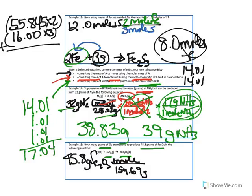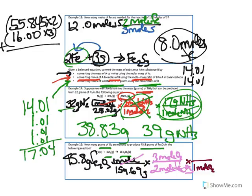This converts grams of Fe2O3 to moles of Fe2O3. Step 2 converts moles of Fe2O3 to moles of O2: there are 2 moles of Fe2O3 for every 3 moles of O2. The final step converts moles of O2 to grams of O2. One mole of O2 weighs 32 grams, since 16 times 2 equals 32.